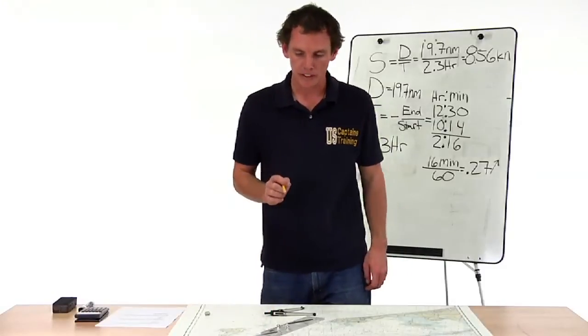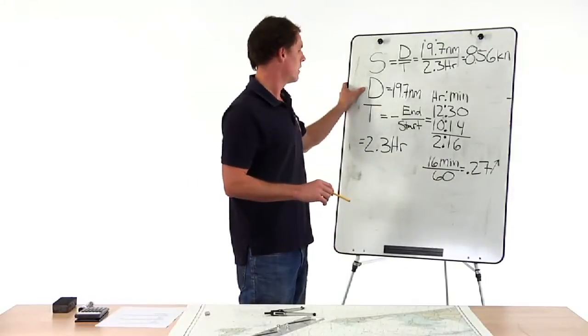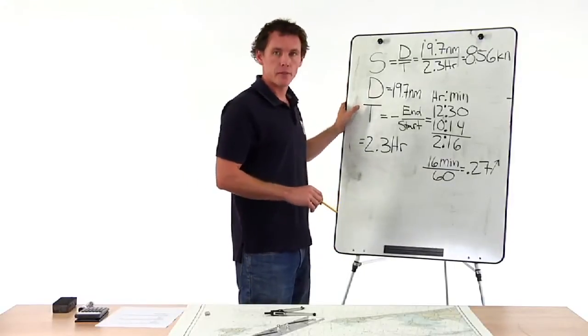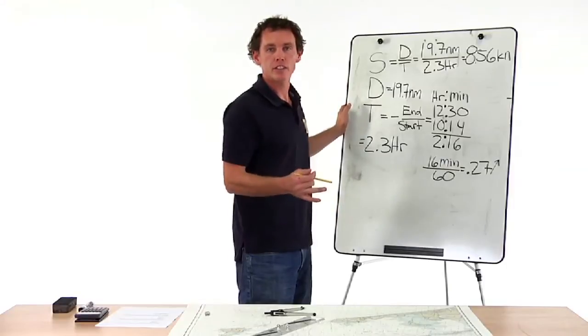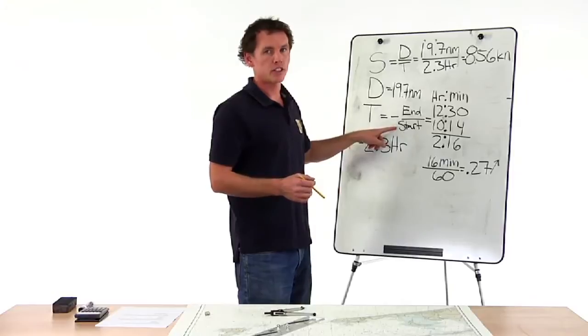So we have nineteen point seven nautical miles for our distance. Here. We need to calculate our time. In the problem we're given an end time and a start time. End time minus start time equals a change in time.